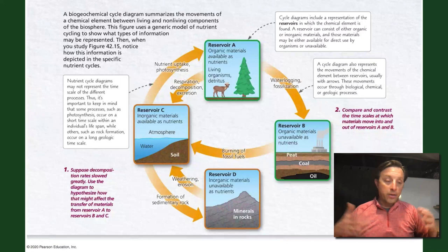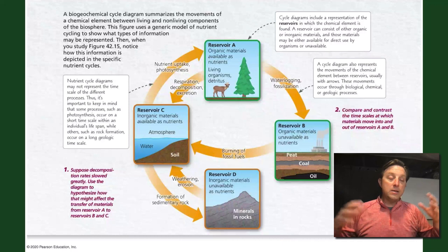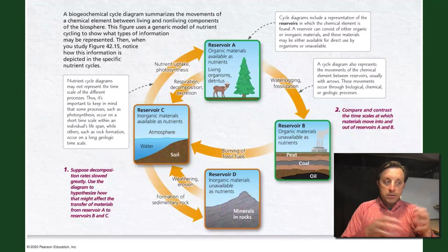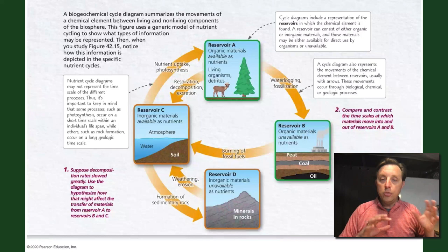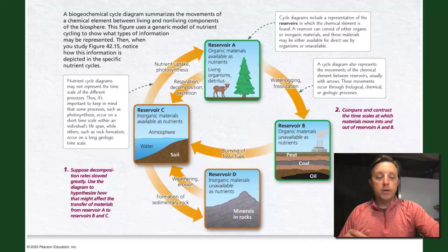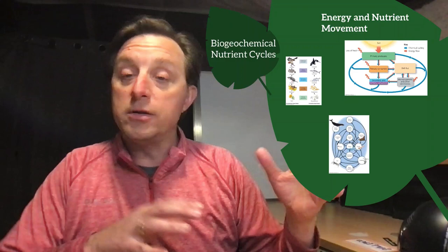An important thing to remember about nutrient cycles is the concept of different reservoirs — big stores of nutrients. There are four different reservoirs categorized as either organic or inorganic materials, and those nutrients are either available or unavailable for living things. Nutrients move between these four reservoirs through different mechanisms. It's not necessary to memorize each cycle's steps, but keep in mind that those four reservoirs exist for all major nutrient cycles.